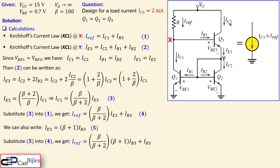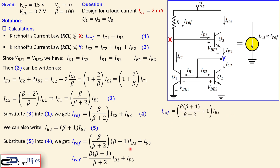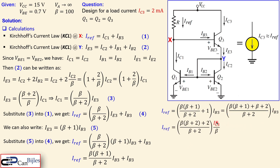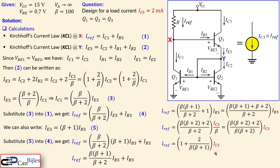This is very close to IC3 since that's just a relationship with beta. Collecting all IB3 terms into one fraction — combining with a common factor of (β + 2) — and noting that IB3 = IC3/β, we substitute beta into the denominator. The resulting expression is exactly the same as the one we derived for the beta helper circuit in example number two.